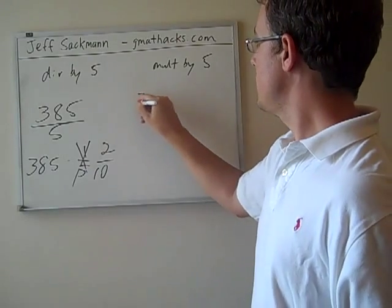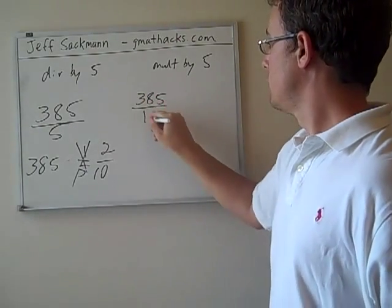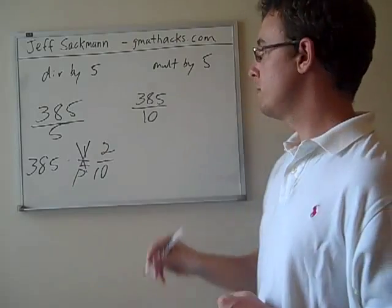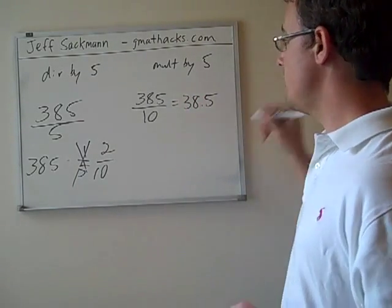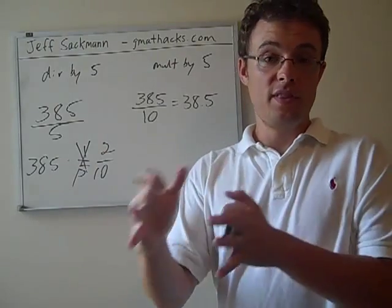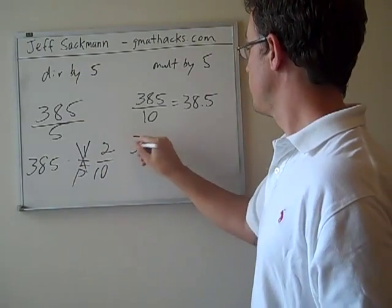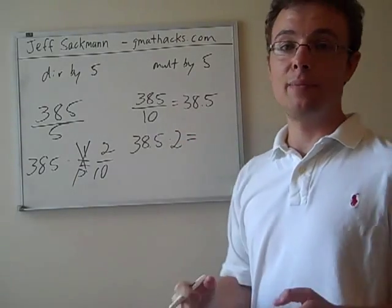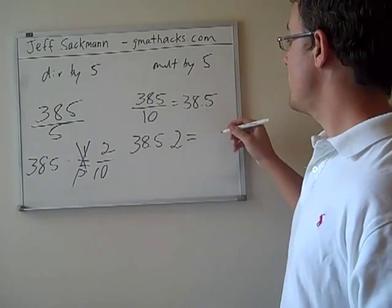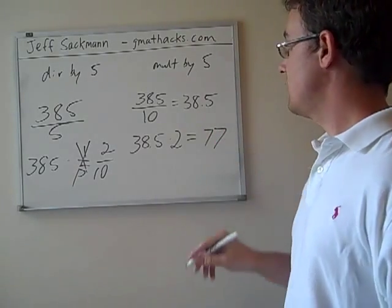So first step, 385 divided by 10. Doesn't get much easier than dividing by 10. That becomes 38.5. Then we multiply by 2. 38.5 times 2. That might take a second in your head. It does for me. It works out to 77.